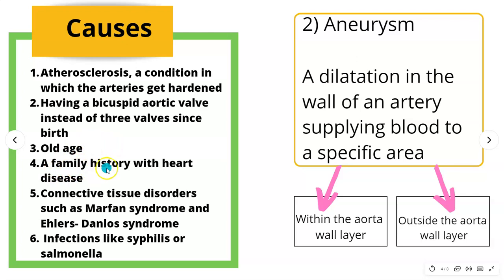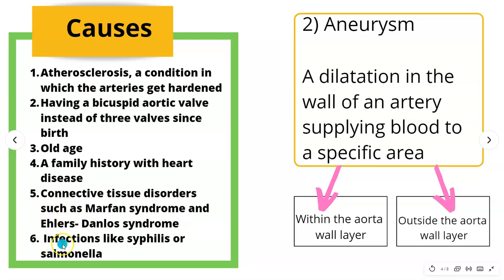We also have family history with heart disease, because this is a hereditary condition. If a parent, grandparent, or ancestor had this kind of issue, some descendants may have it too. Connective tissue disorders such as Marfan's syndrome and Ehlers-Danlos syndrome can also cause this problem, as can untreated infections like syphilis and Salmonella.